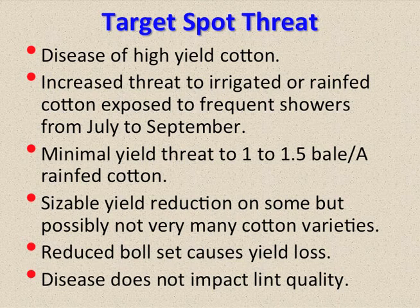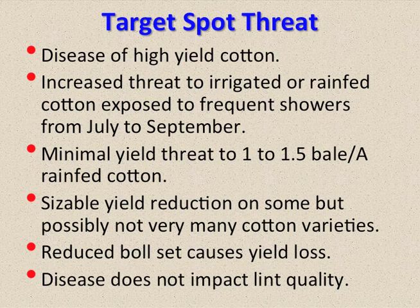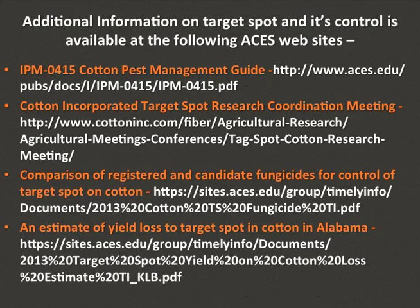In summary, target spot is a disease of high-yield cotton, which is intensified by frequent irrigation or summer rain showers, but represents a minor threat to lower-yielding rain-fed cotton, particularly in the Tennessee River Valley region in north Alabama. Results from 2013 trials suggest that yield declines are tied to reduced boll retention, while lint quality factors are unaffected by target spot. Information on the diagnosis of target spot and other leaf spot diseases in cotton can be found in the online timely information publication, Leaf Spot Management in Alabama Cotton: Control of Potash-Incited Leaf Spot Diseases and Target Spot. Additional PowerPoint presentations on target spot diagnosis and control can be viewed at the website of Cotton Incorporated.